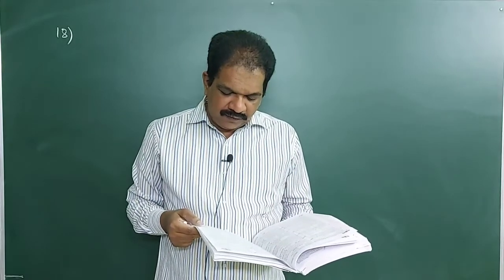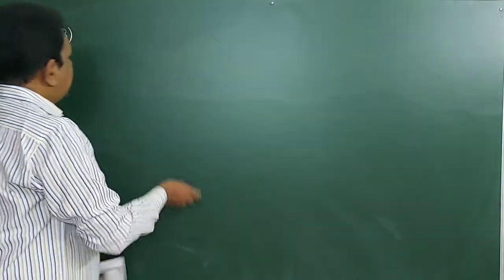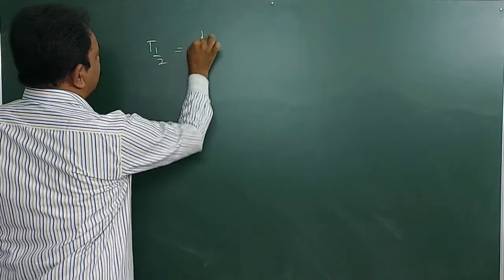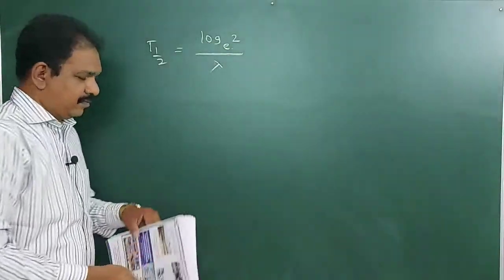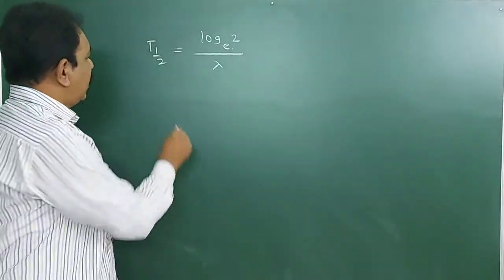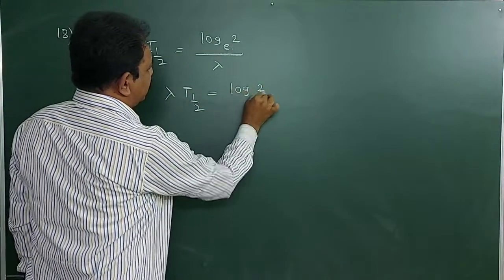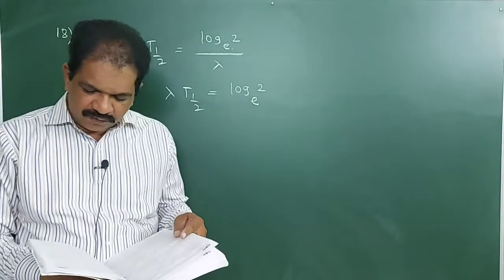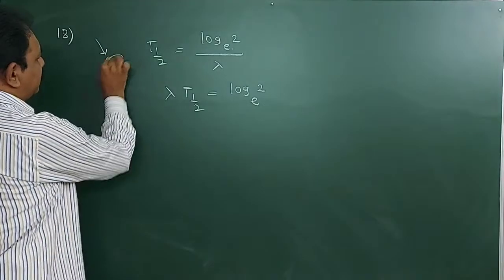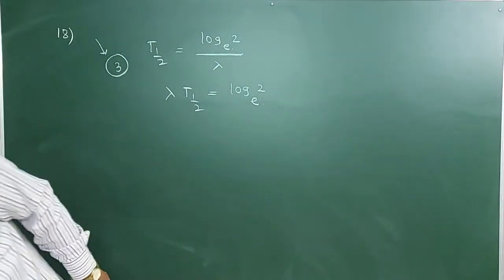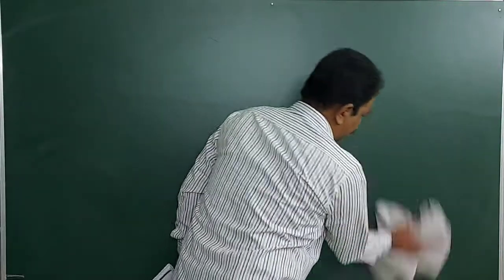18th question: The relation between half-life and decay constant. T_half = ln2 / λ, that is, λ·T_half = log_e(2). It's just a formula they are asking. Question 18, the answer is the 3rd option.